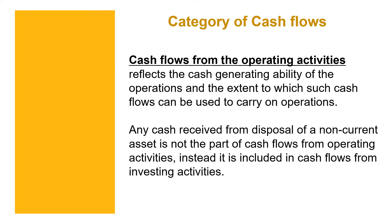As stated in the definition of investing activities, as long as a long-term asset or long-term investment is involved, it falls under investing activities. So even upon disposal — when we receive cash from selling a non-current asset such as land or machinery — it is not part of operating activities since it is a long-term asset. Therefore, it must be part of cash flow from investing activities, not from operating activities.